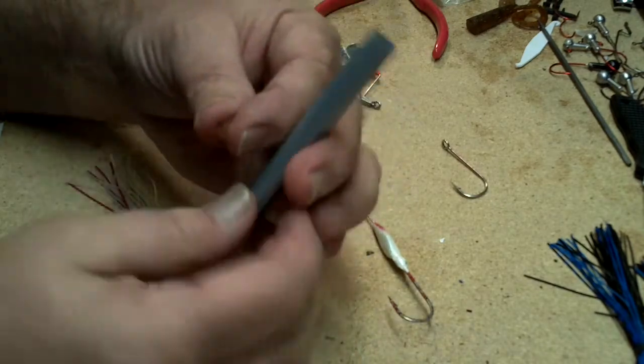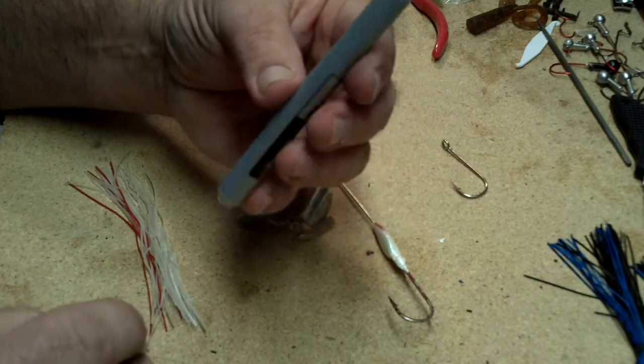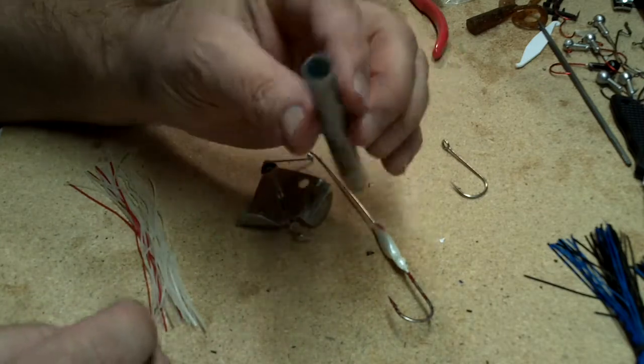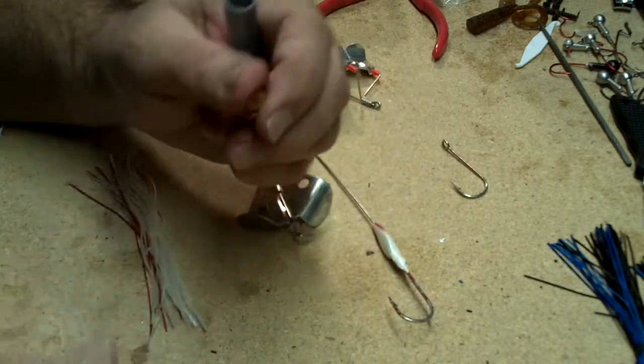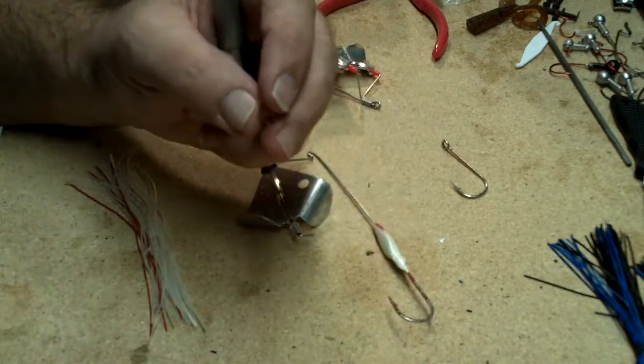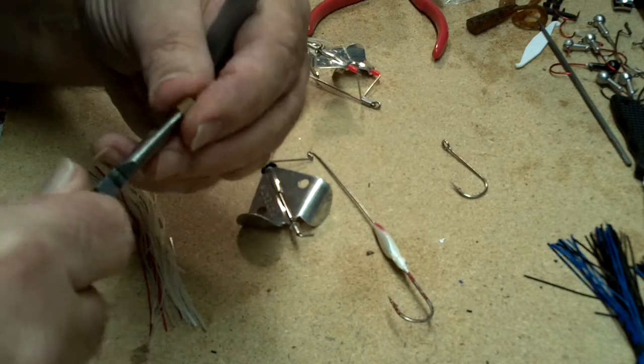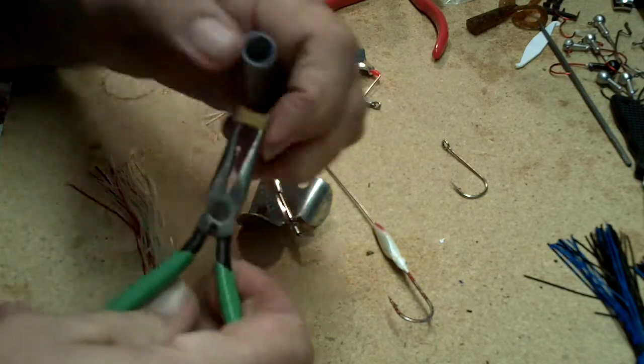What I've got here is an old marker body from a felt tip marker that I've pulled the insides all out. Then take a pair of pliers, small needle nose or a hemostat, anything like that will work.